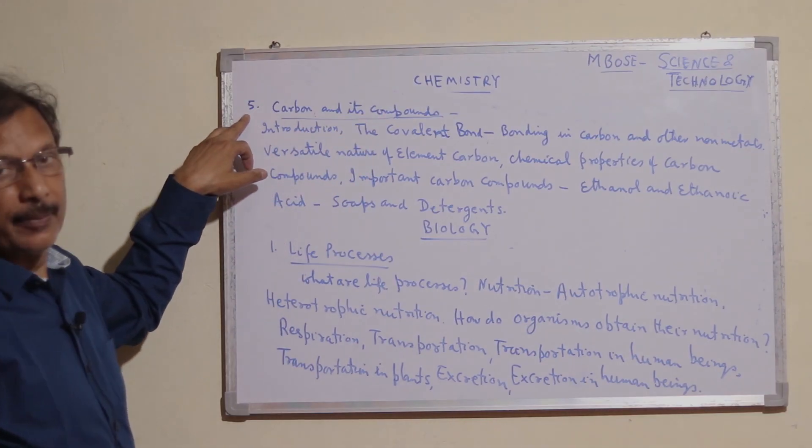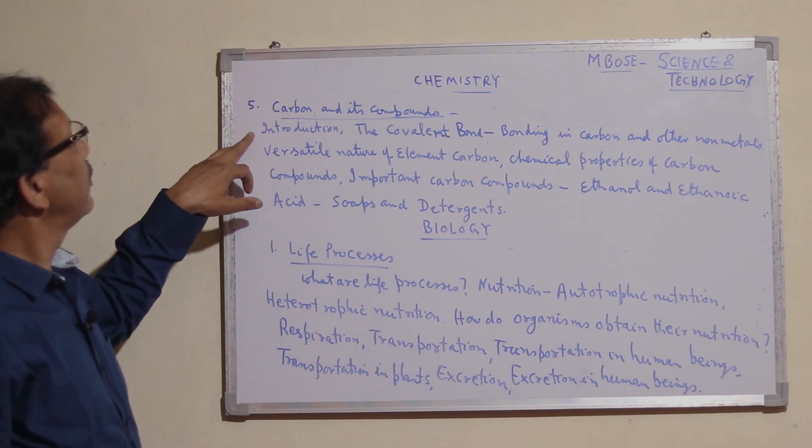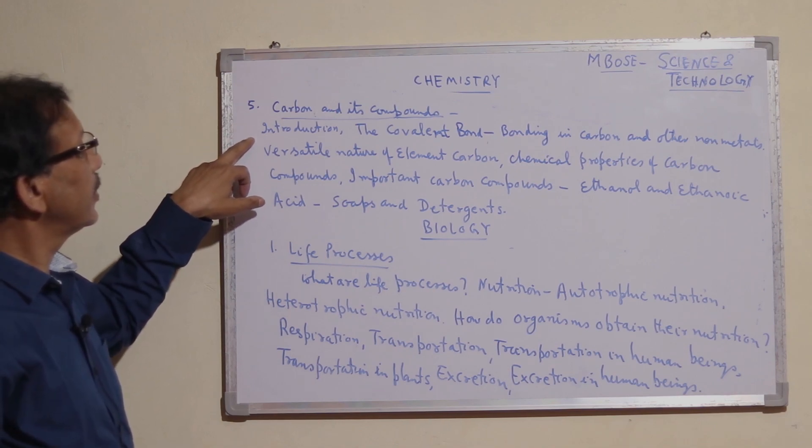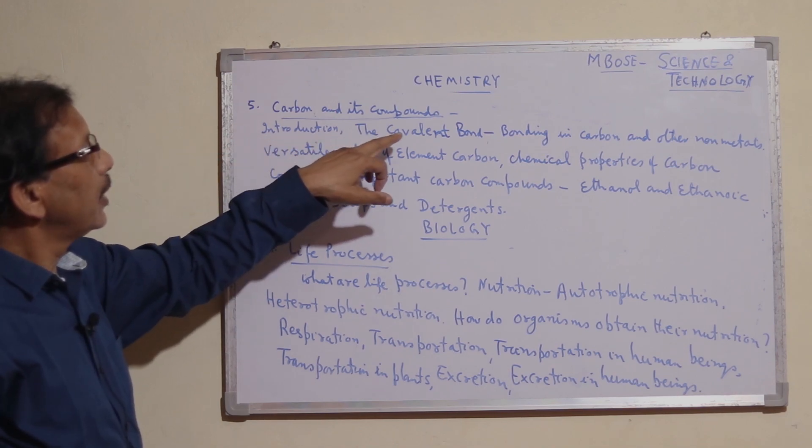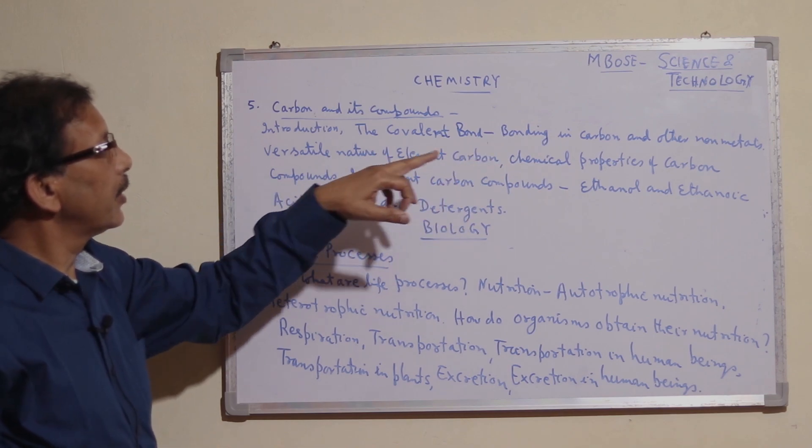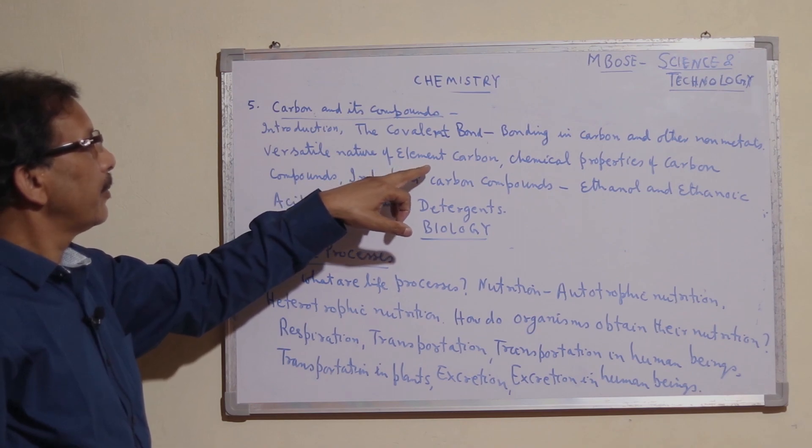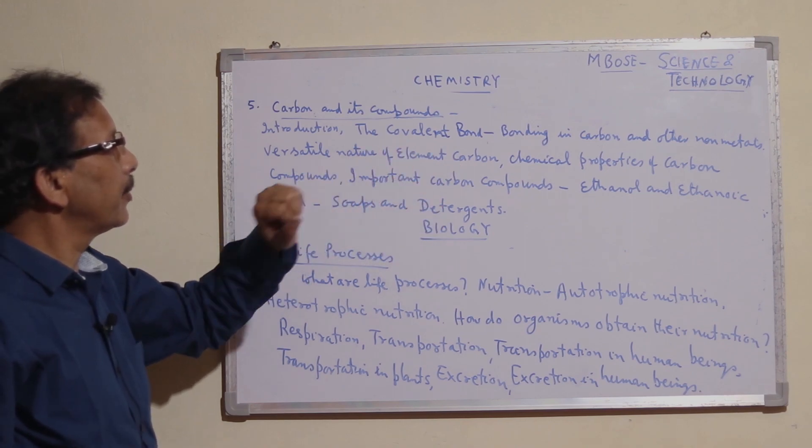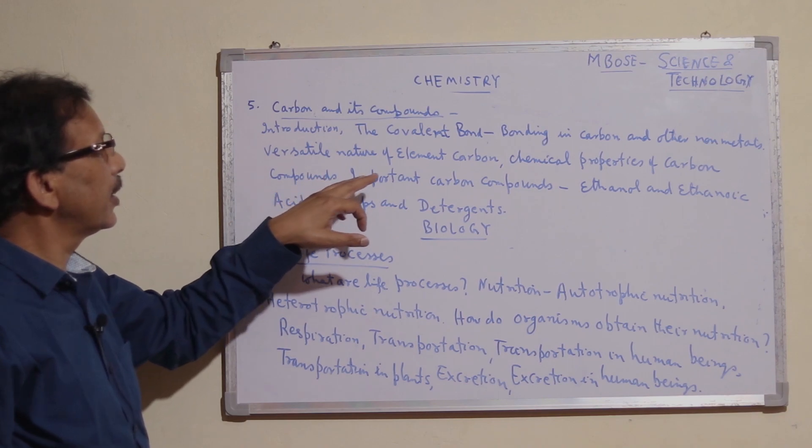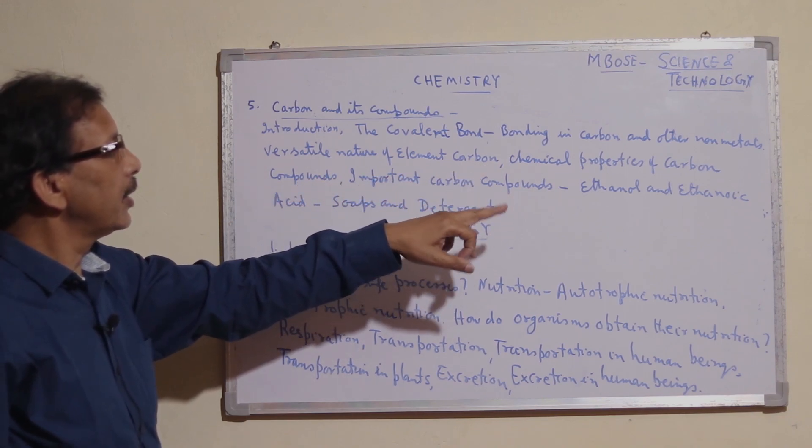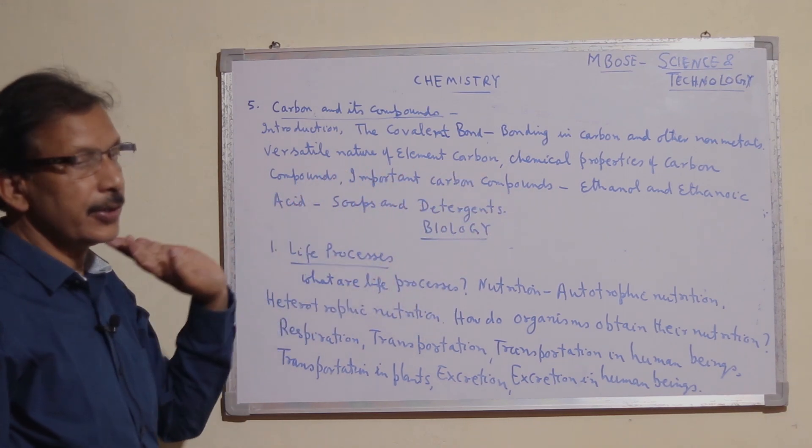The last Chemistry chapter is carbon and its compounds. We study introduction, covalent bonding, bonding in carbon and other non-metals, versatile nature of carbon, chemical properties of carbon compounds, important carbon compounds like ethanol and ethanoic acid, and soaps and detergents.